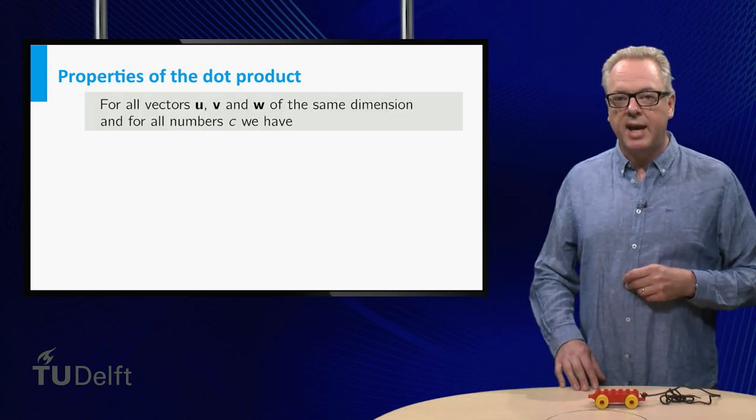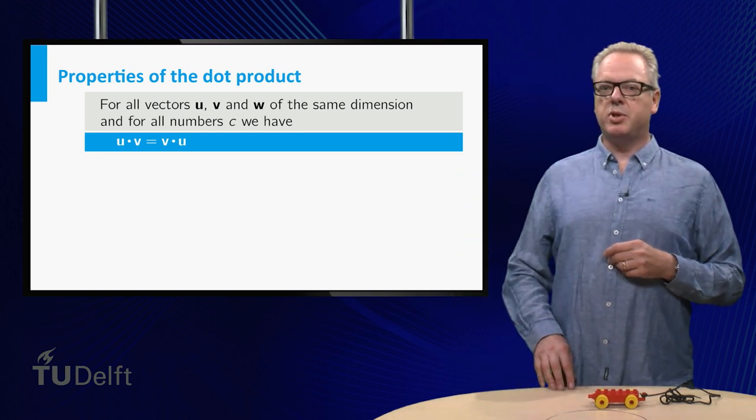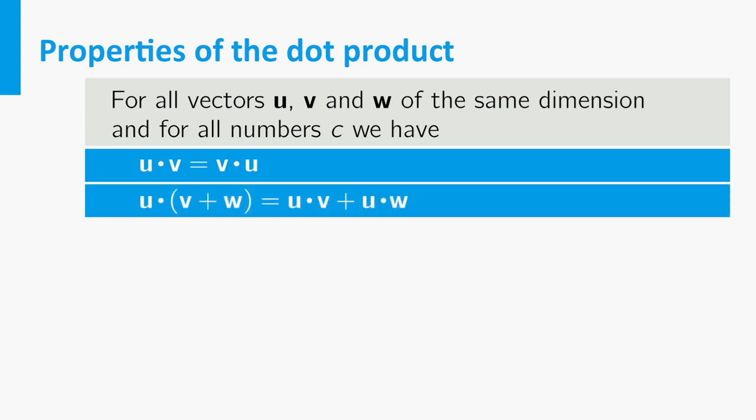The first states that the dot product is commutative, a property well known from ordinary multiplication with numbers. With numbers, you are also used to the second property, which combines the dot product with the sum, better known as the distributive law.